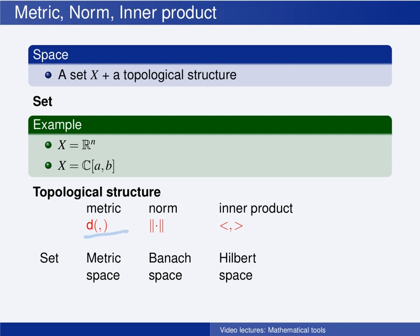If we can define a metric on the set, then the set together with this metric make out a metric space. If we can define a norm on the set, then the set together with this norm make out a Banach space. And if we can define an inner product on the set, then together the set with this inner product make out a Hilbert space.